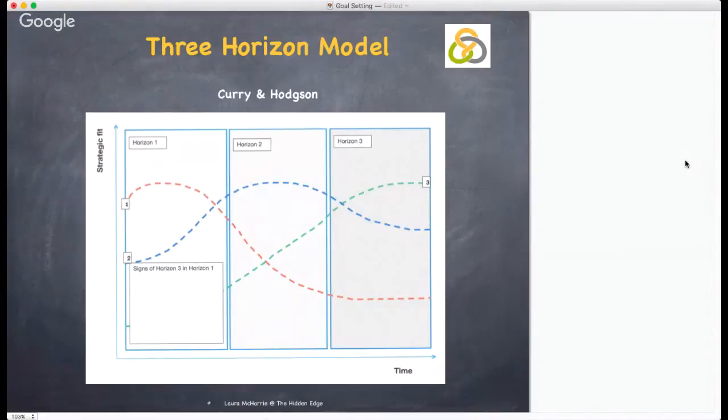The diagram models three separate horizons of growth, with time along the X axis and fit for purpose or strategic fit along the Y. To use the three horizons approach, you can work through a number of steps.